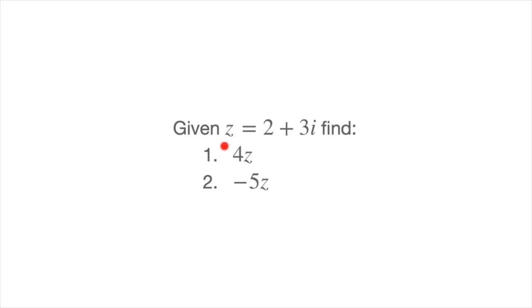We're given a complex number, z equals 2 plus 3i, and we're asked to find 4z, in other words 4 times z, and negative 5z, which is negative 5 times z.